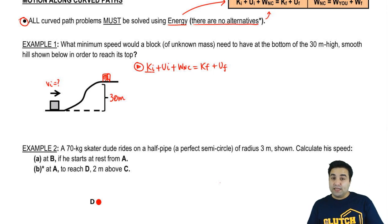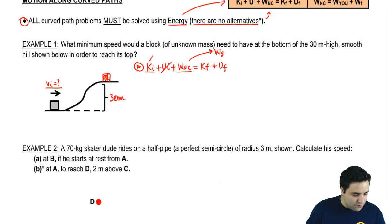Is there a kinetic energy in the beginning? There is kinetic energy in the beginning because you have a speed. If you had no speed, you wouldn't be moving and you would never get to the top. There is no potential energy because you are on the ground. The work done by non-conservative forces is the work done by you, plus the work done by friction.